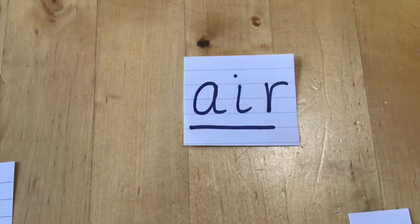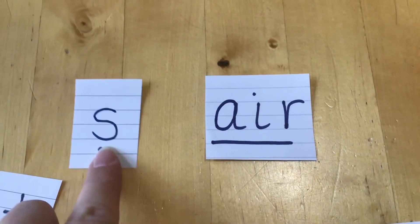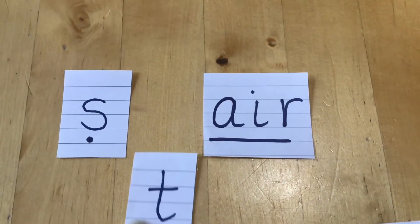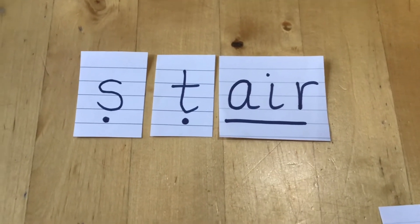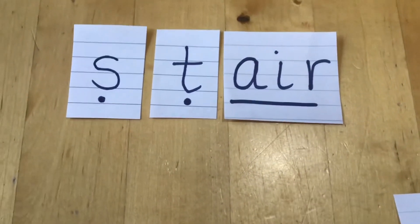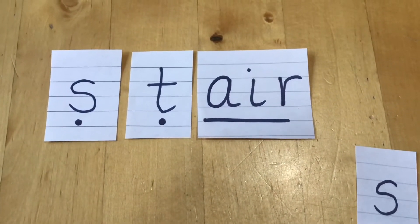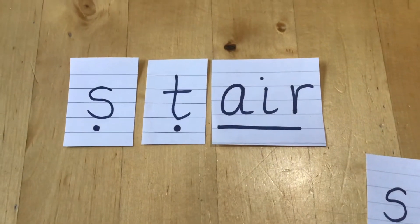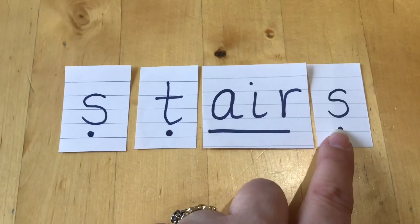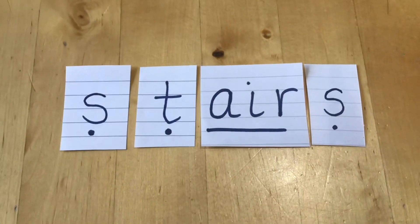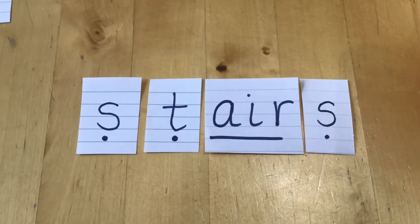You can also write some trickier words using air. See if you can work this word out. Now I don't know about you, but I've got more than one stair in my house. I've got lots and lots of stairs. Stairs. I've got the stairs to bed. Stairs. That's a tricky one, isn't it?